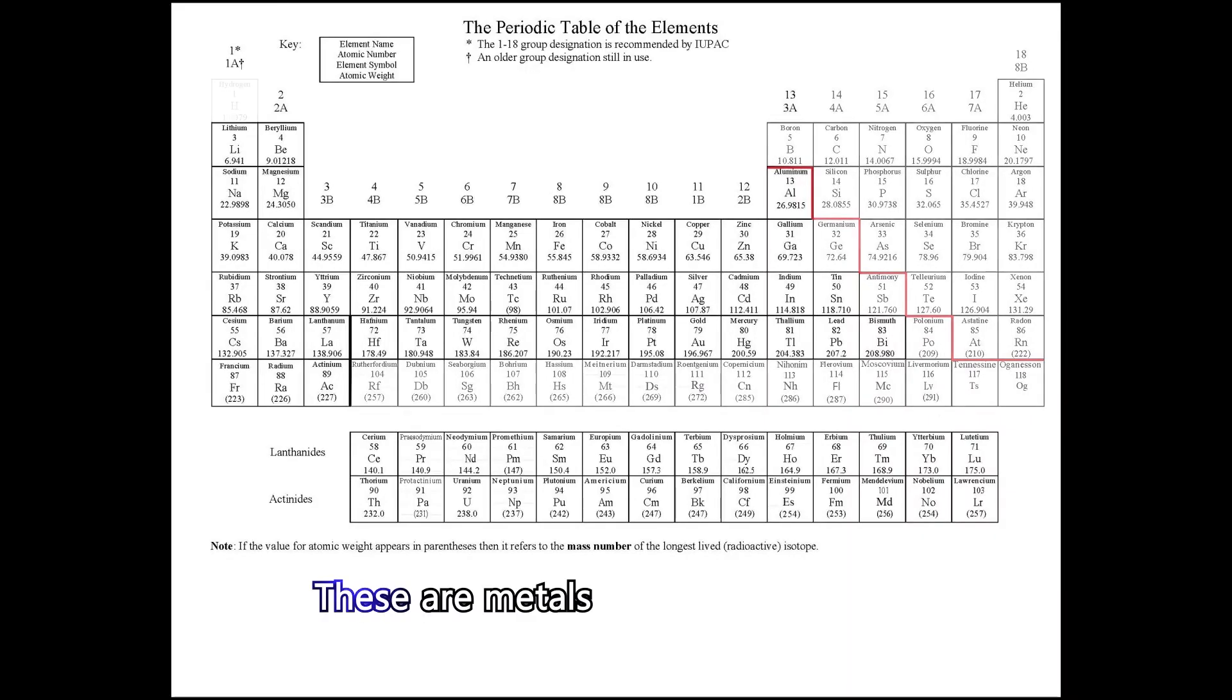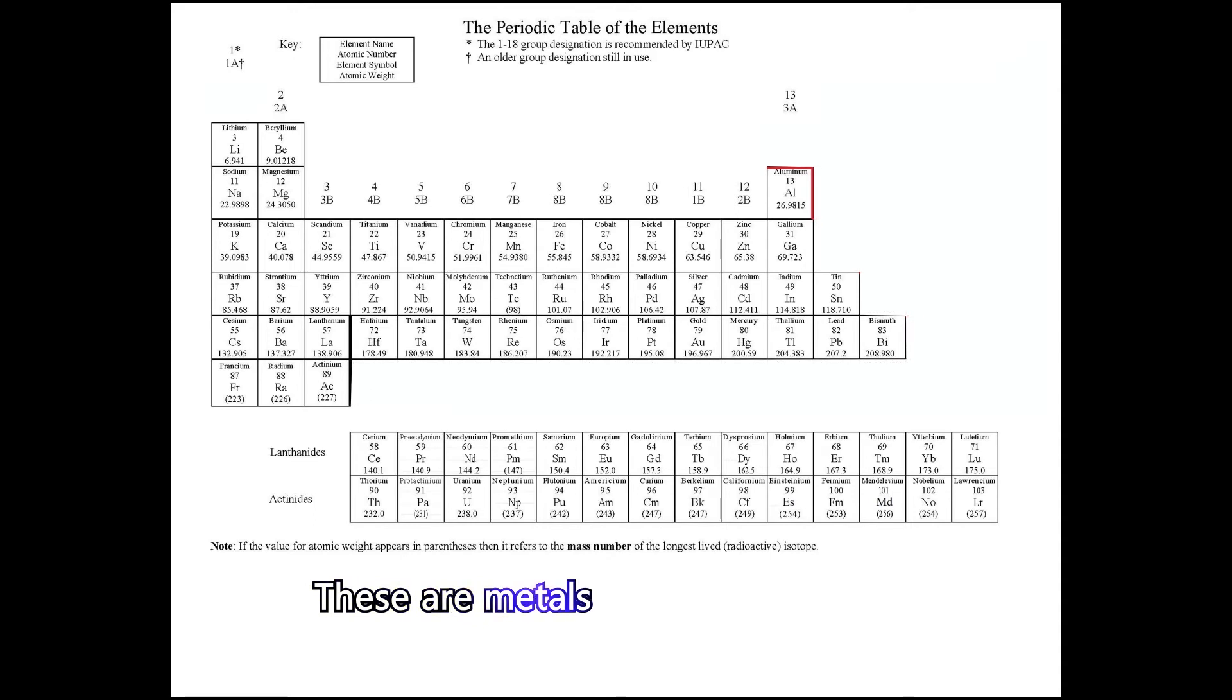The metals are on the left-hand side of the red stepladder border. The metals are shiny, ductile, malleable. They conduct heat and electricity and form ionic bonds with nonmetals.